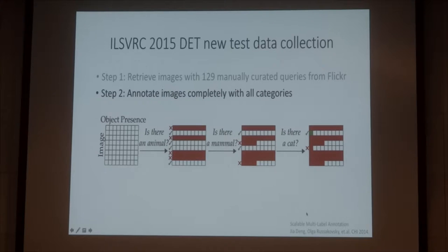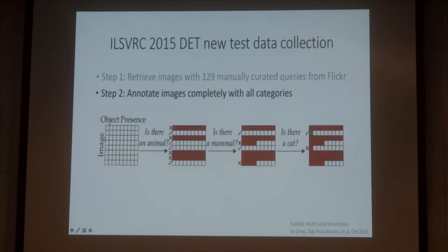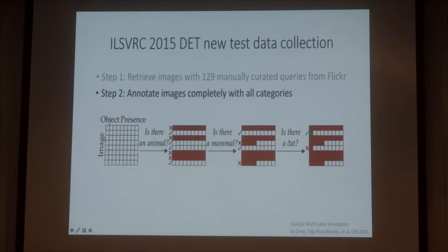Specifically, suppose you have a lot of images and you want to decide what object is in the image. You first ask: is there an animal? If not, then probably a lot of those images you don't need to consider anymore. The second step is: is there a mammal? That's a sub-category of animal. And then you also filter out some images. Eventually you come down to a leaf node in the detection class and you ask: is there a cat? Okay, so I find a cat here.